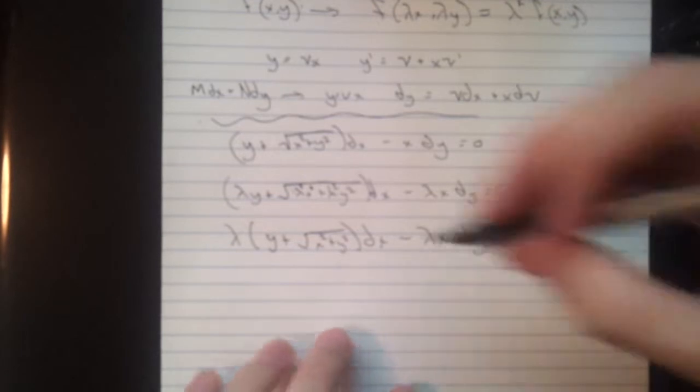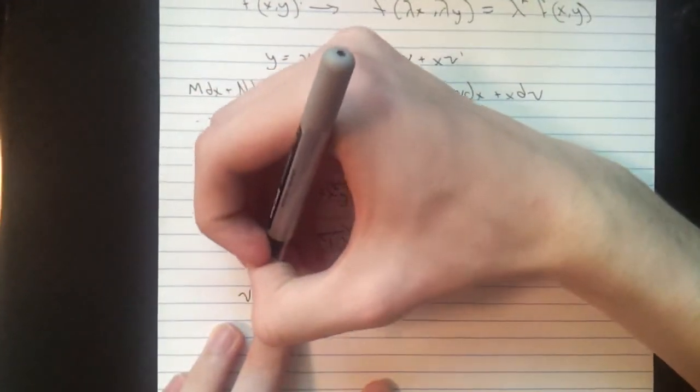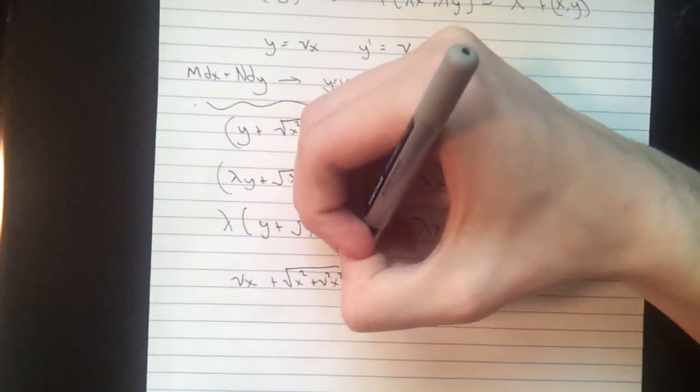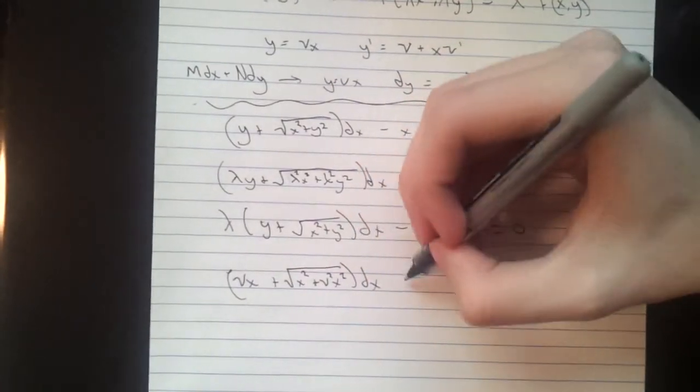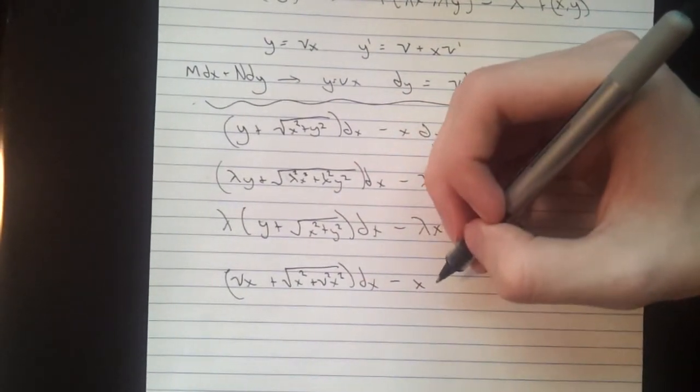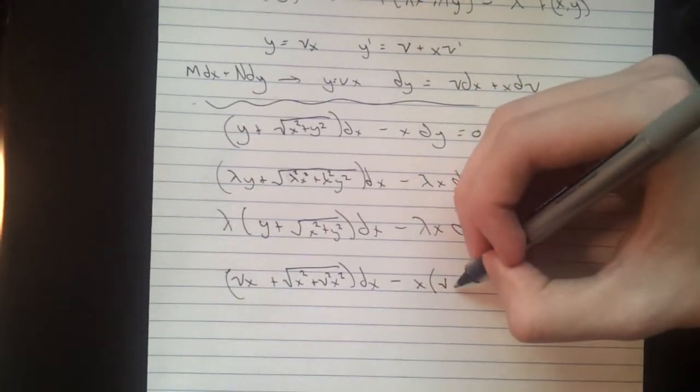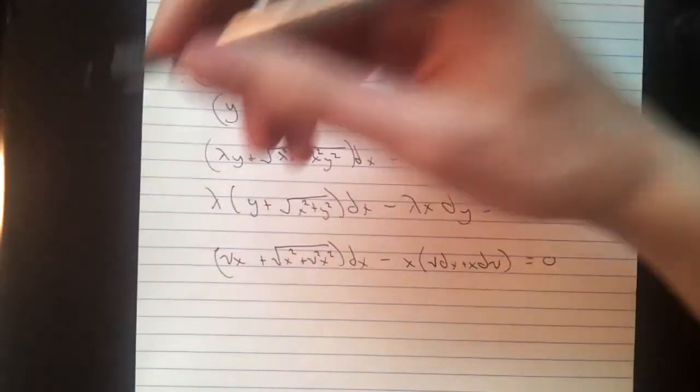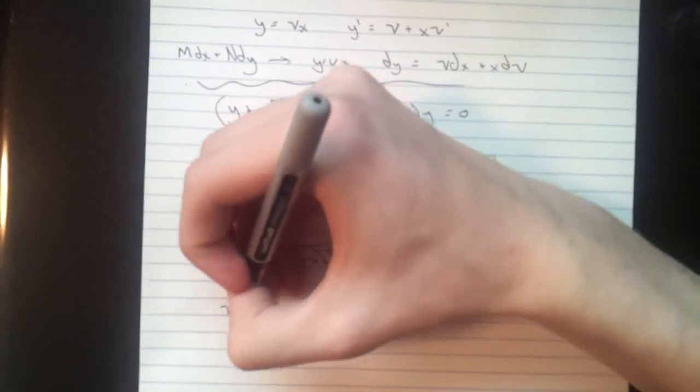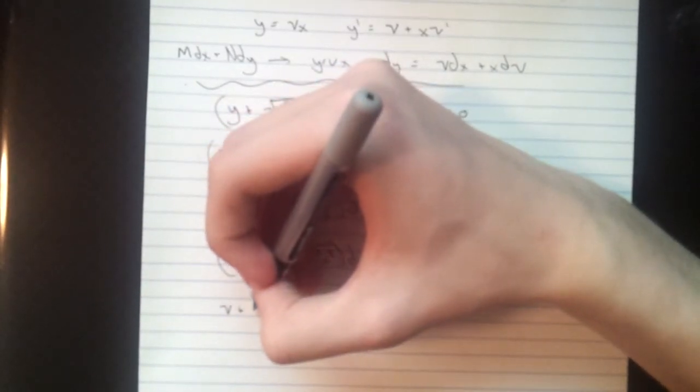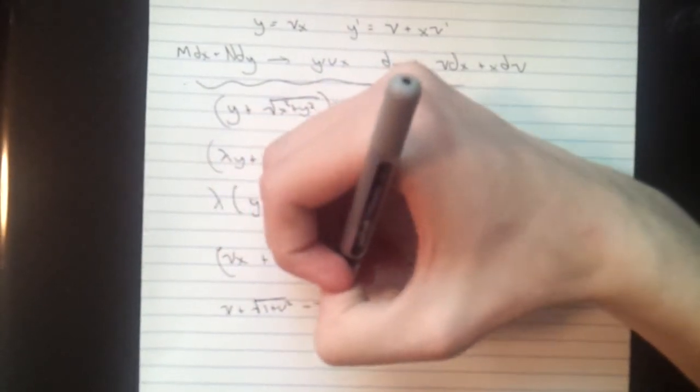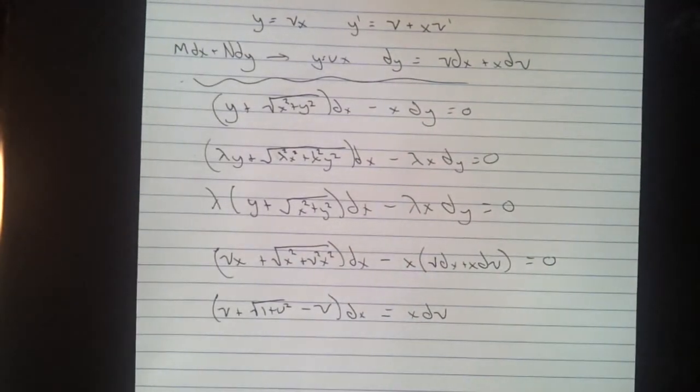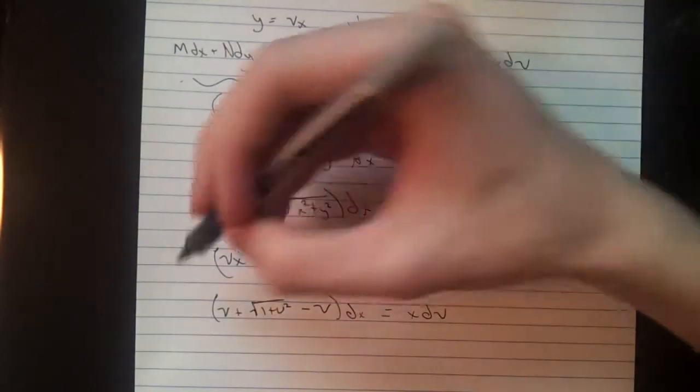I'm going to replace y with vx. So we get vx plus square root of x squared plus v squared x squared, all of that dx minus x, remember dy is vdx plus x dv. If you separate those out, and get them in the right places, you get v plus square root of one plus v squared minus v dx equals x dv. These, of course, will cancel out.